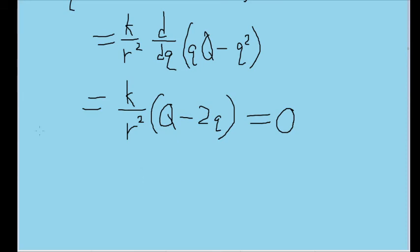Keep in mind that k and r squared are not going to be 0 on their own. So the only way for this function to be equal to 0 is if this entire big Q minus 2 small q term equals 0, so that it multiplies against these other terms and makes the whole function 0.